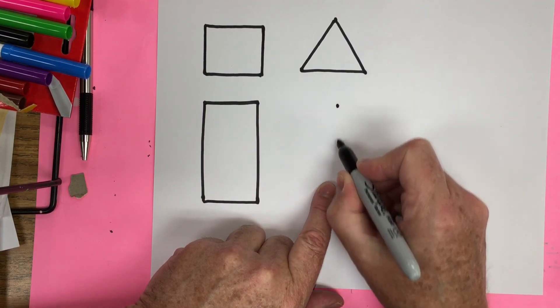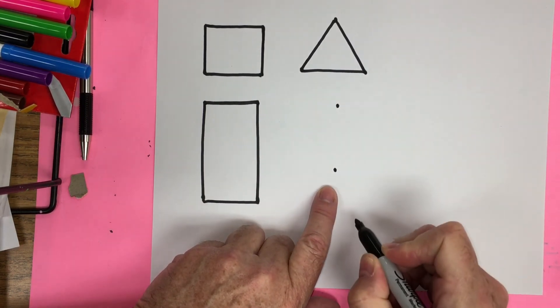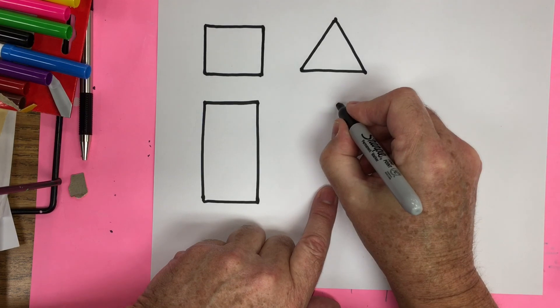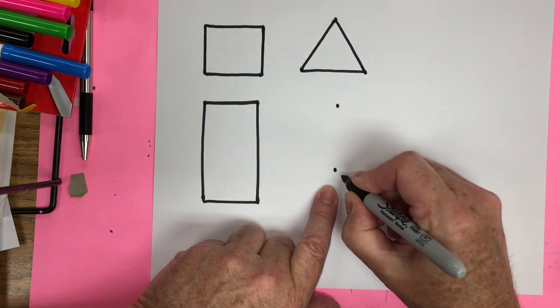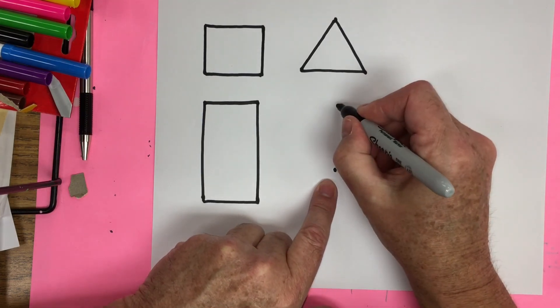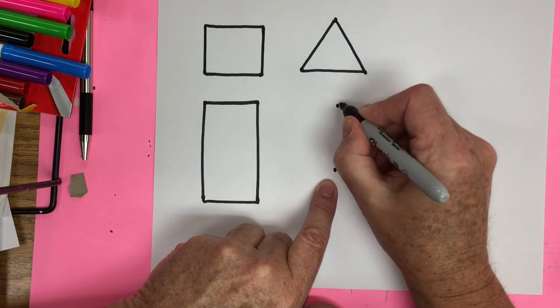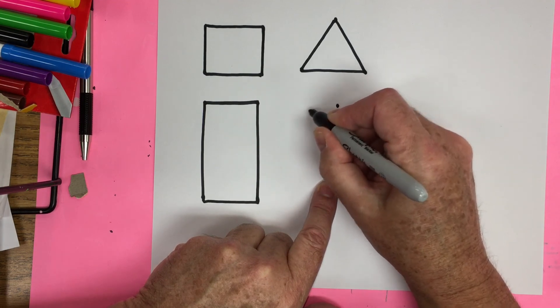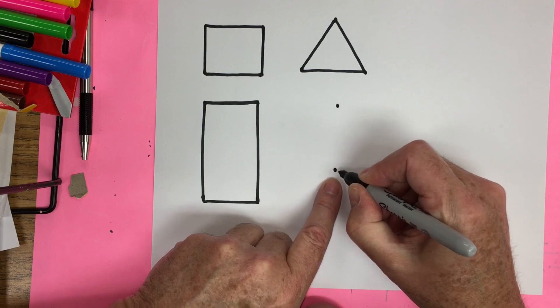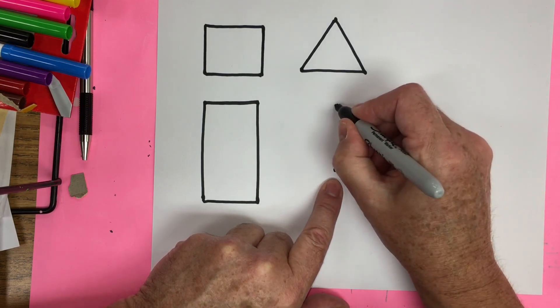So directly below this dot, we're going to put another dot. This is going to be made up of a curved line. So we're going to come out. We're going to practice first in the air, out, around, and back to that dot. So watch me first.